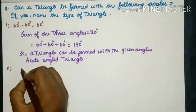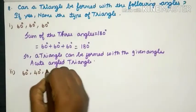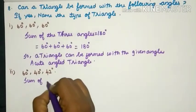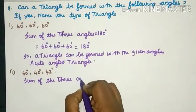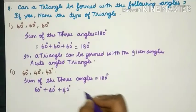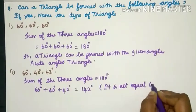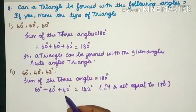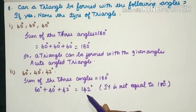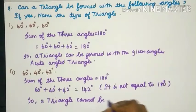Second sum: the given three angles are 60°, 40° and 42°. As we know, the sum of three angles equals 180°. But 60 + 40 + 42 = 142°, which is not equal to 180°. Therefore a triangle cannot be formed with the given angles.